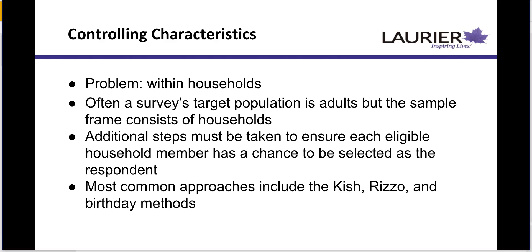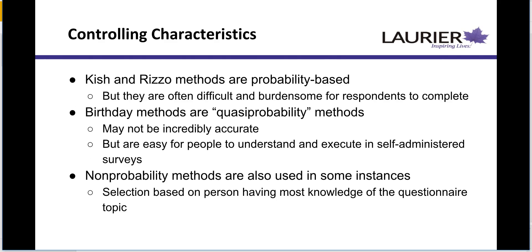There are three different approaches for randomly selecting a respondent from a household. We'll talk about the Kish method, the Rizzo method, and the birthday method. These are ways of, when you call a house or knock on a door, trying to figure out how to randomly select somebody to survey instead of picking the retired grandpa that happened to open the door. How do you ensure that you don't just survey grandpas rather than getting a good picture of everybody?